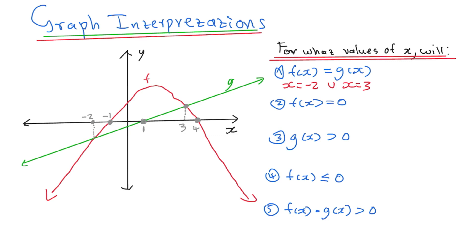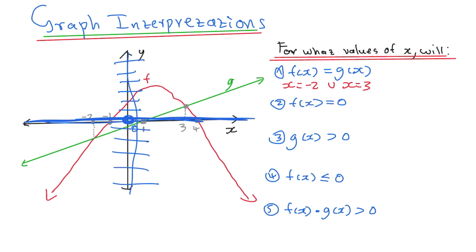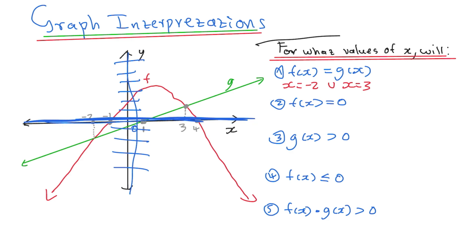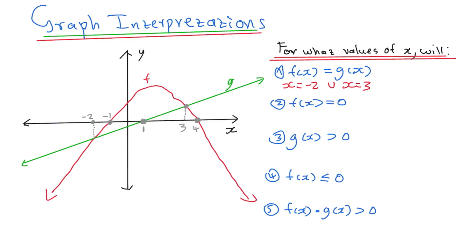When you look at the x-axis, that's where your y value is 0. Our y is positive on one side and negative on the other side. So where the x-axis is, that's where y is 0 — any point exactly on the x-axis. When they ask for what values of x, you're going to write the values of x where y is 0, which is where the graph cuts the x-axis. Our f of x, the red one, cuts the x-axis.